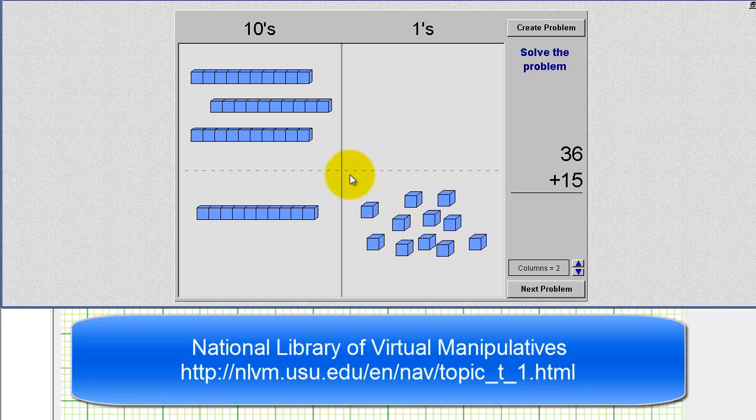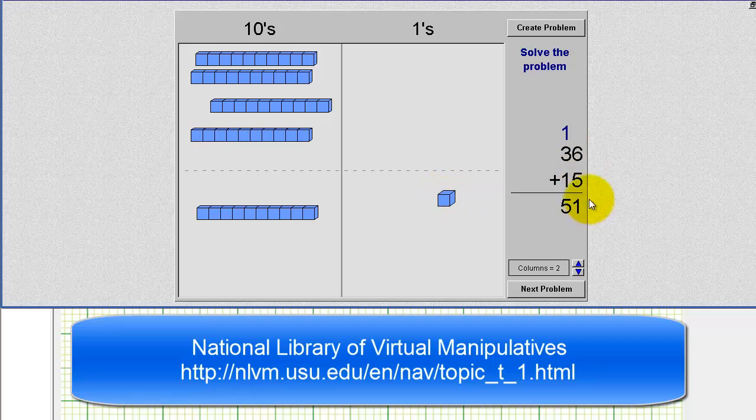So since we have a total of eleven here, where eleven is one ten block and one one block, we'll make an exchange here and move this ten block over to the tens. On paper, we indicate this by putting a one in the ones place value and putting this one up here in the tens column to represent the exchange for one ten block.